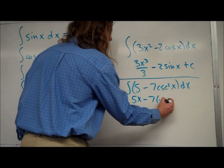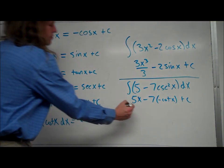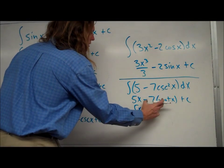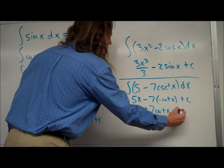The antiderivative of cosecant squared is negative cotangent x. So the antiderivative there is negative cotangent x plus c. Now we can go ahead and simplify that, and have it 5x. These negatives would cancel. It would be plus 7 cotangent x plus c.